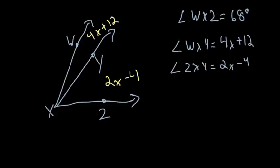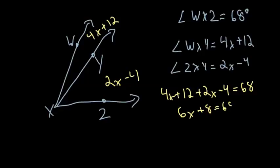So to do that, you need to add those two angles to equal the whole. So you would add 4X plus 12 plus 2X minus 4 equals 68. Combine our like terms, so that would be 6X plus 8 equals 68. Subtract the 8, you get 6X equals 60. So X would equal 10.